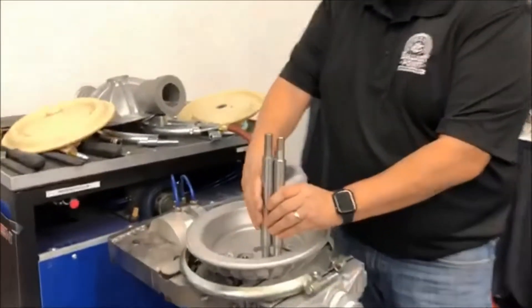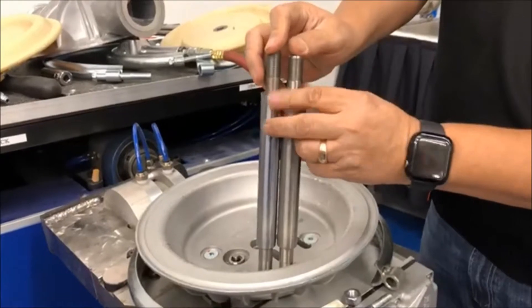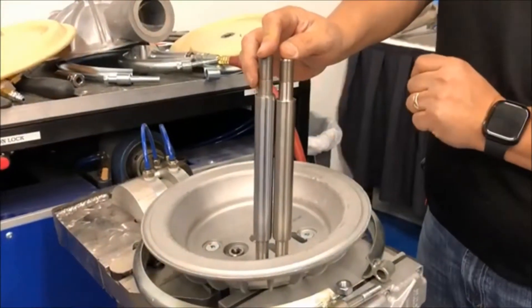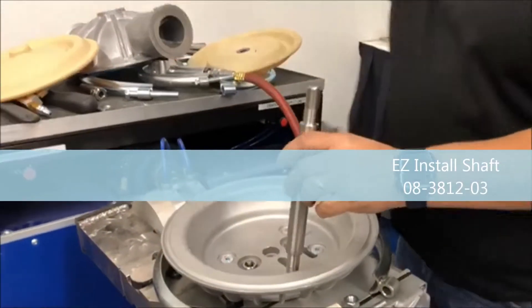You notice we have two shafts, the full stroke and the reduced stroke shaft. So the reduced stroke shaft is what we're going to use.